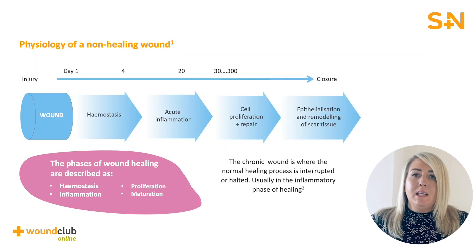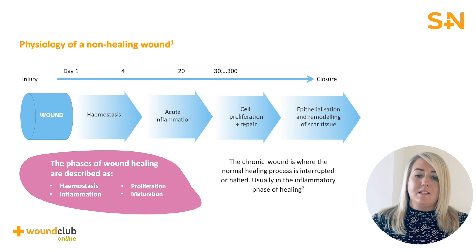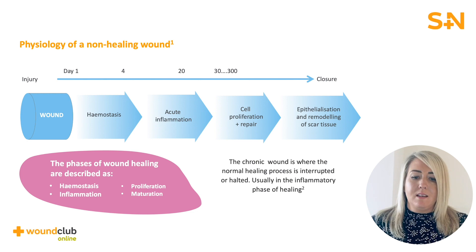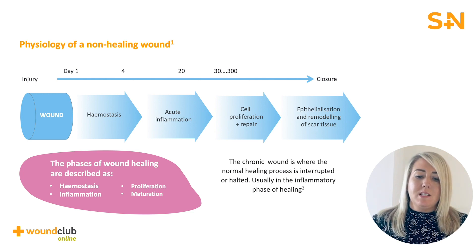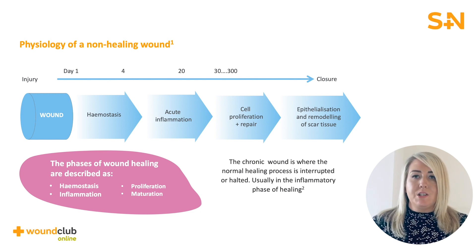Wound healing represents a dynamic, highly organised series of events. There are four phases of wound healing and the process starts with haemostasis. It then progresses through a destructive inflammatory phase which then leads on to cell proliferation and repair. It finishes off with epithelialisation and remodelling of scar tissue.